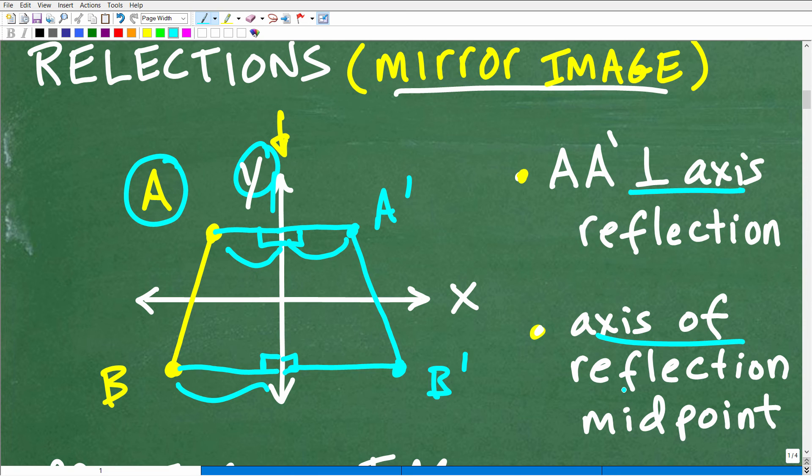So another main idea is that the axis of reflection is the midpoint. And I kind of already showed you right here. So this point here, the axis of reflection, is the midpoint or halfway point between these two points here, B and B prime, or A and A prime.